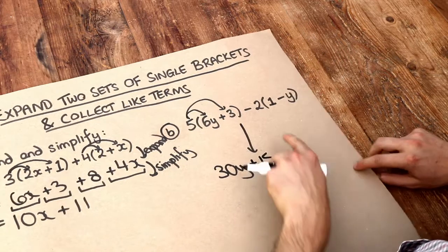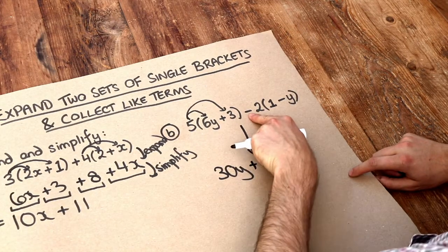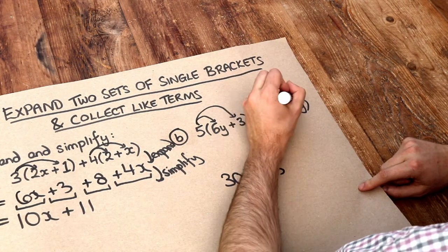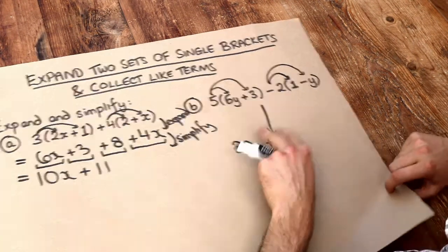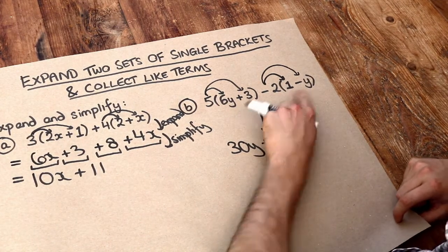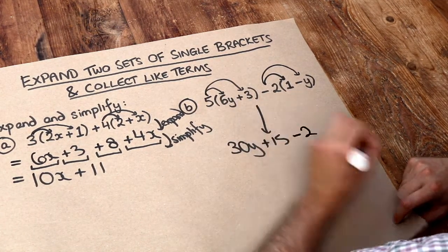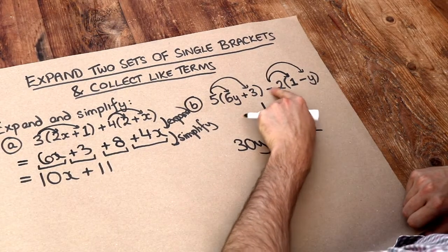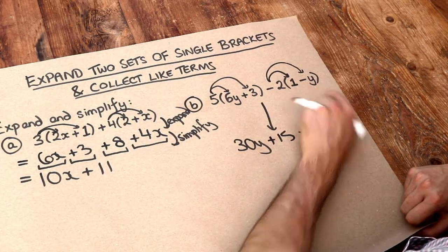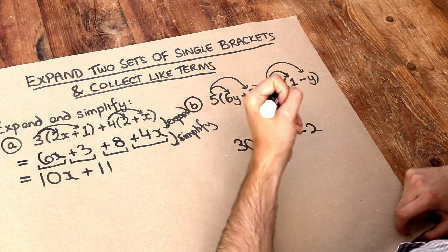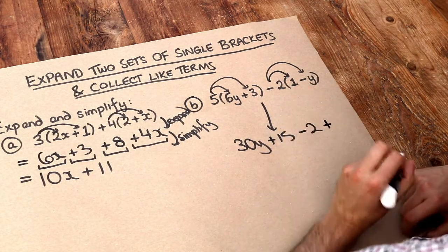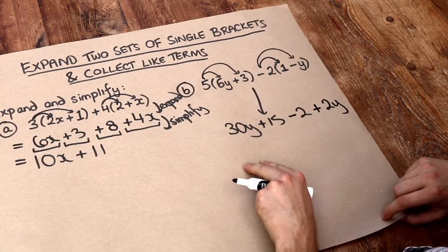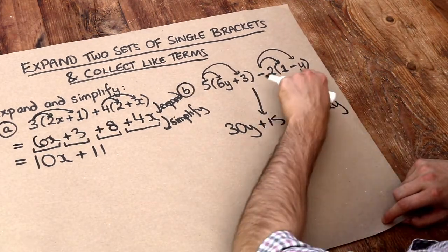And then we're doing this minus 2, don't forget the minus, times by the 1 and the minus 2 times the minus y. Now, minus 2 times 1 is just minus 2 because negative times positive is negative. And this is where we have to be very careful. Minus 2 times minus y, or negative times negative is positive. So it's going to be positive and then 2 times y is just 2y. So just be very careful when you've got a double negative like that.